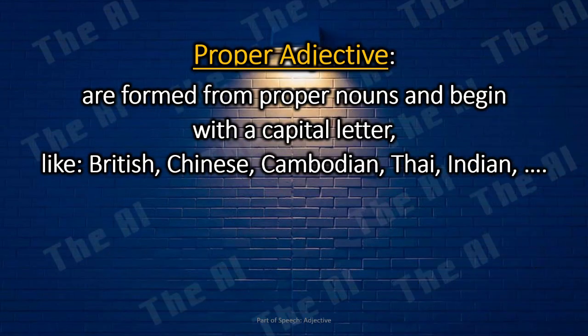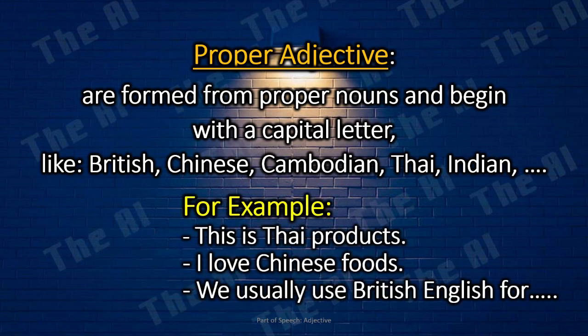Proper Adjectives. Proper adjectives are formed from proper nouns and begin with a capital letter, like British, Chinese, Cambodian, Thai, Indian, etc. For example: This is Thai products. I love Chinese foods. We usually use British English for speaking in this country.